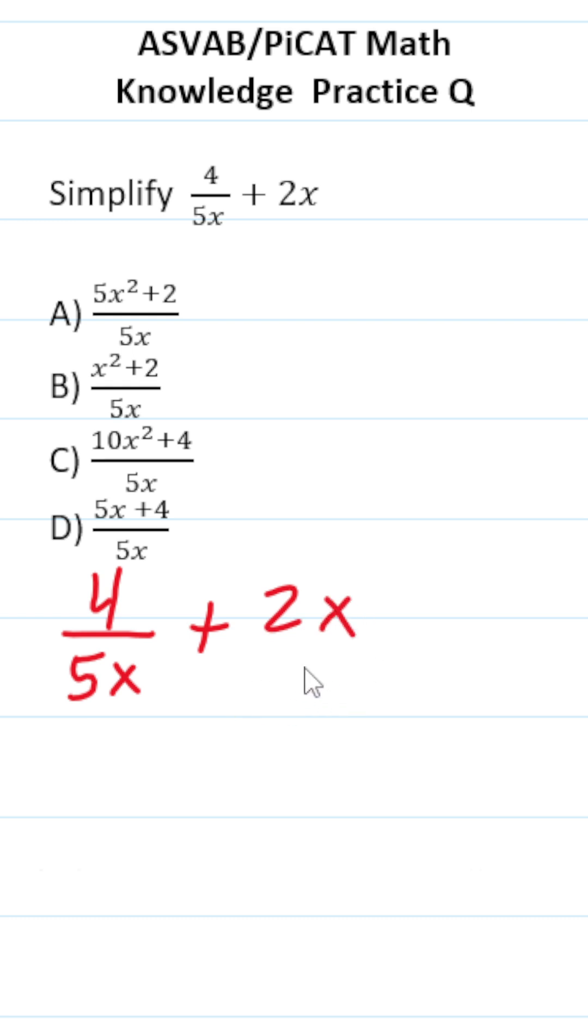In order to add fractions, they have to have a common or the same denominator. So the first thing I'm going to do is write 2x as a fraction by placing it over 1.